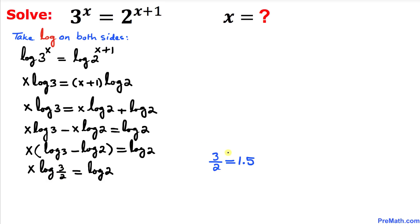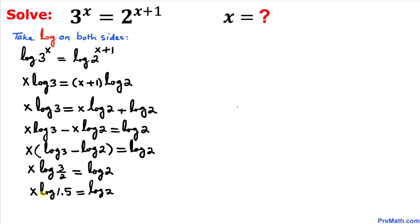Now let's focus on this fraction: 3 divided by 2 can be written as 1.5. So I can write x times log of 1.5 equals log of 2. Now let's isolate x by dividing both sides by log of 1.5.